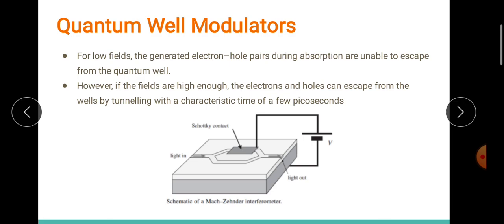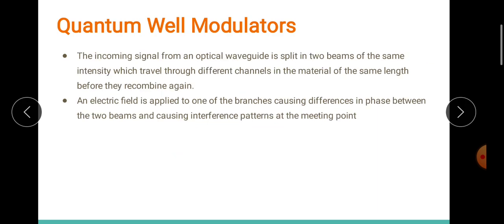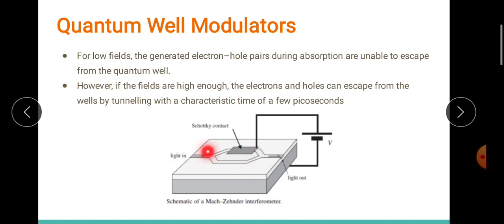We have another kind of modulator which is the Mach-Zehnder interferometer. In this device, the signal that comes into the optical waveguide gets split up, and after splitting and traveling their respective distances they finally join together, interfere, and produce the output light. An electric field is applied to one of these branches alone, which causes a phase difference between the two beams, and finally when they meet at a point there is an interference pattern that they generate.